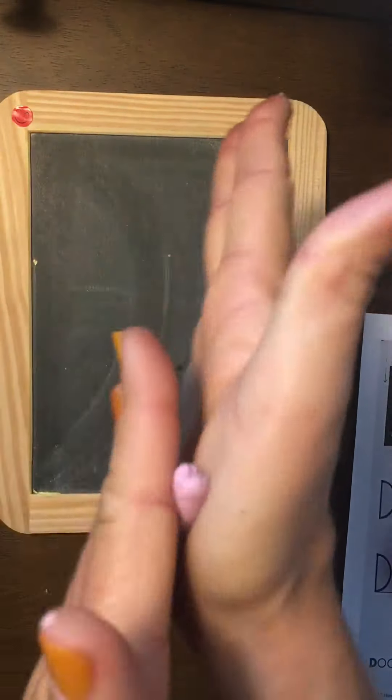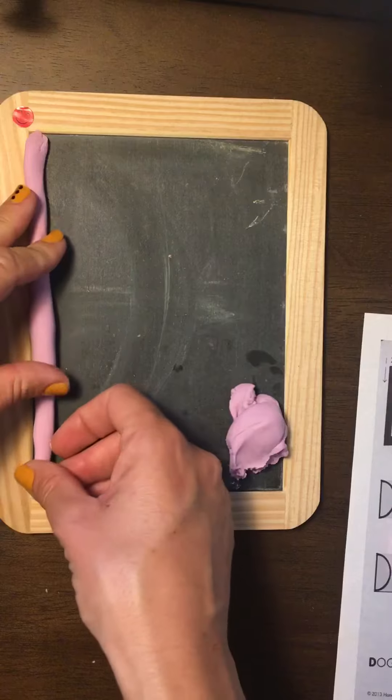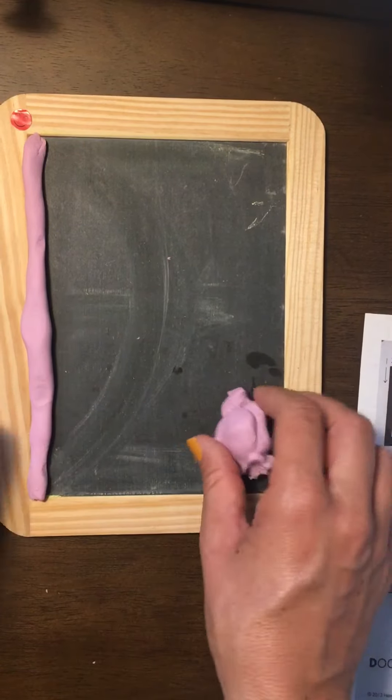I'm going to roll snakes out of the play-doh to make a big line and a big curve. We want to make sure it touches the top and the bottom so I'm going to stretch it. Then the next one, I'm going to roll it very skinny to make a big curve.